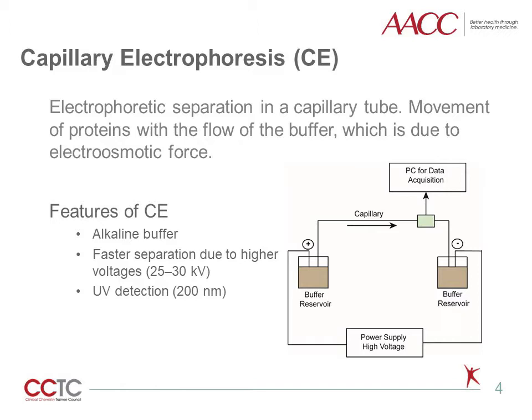Capillary electrophoresis is a separation technique where electrophoresis is performed in a capillary tube with the application of high voltage. CE consists of a high voltage power supply, a sample introduction system, a capillary tube, a detector, and an output device. Capillary tubes are usually composed of fused silica with an internal diameter of only 20 to 100 micrometers. The fused silica contains silanol groups that become ionized in an alkaline buffer, creating an electric double layer producing a flow of buffer towards the cathode. This electroosmotic flow causes most proteins to travel in the same direction regardless of their charge. Proteins move from anode to cathode and are detected usually with 200 nanometer wavelength UV light, but also through electrochemical, fluorescence, conductance, or mass spectrometry methods. CE is popular in clinical laboratories because of fast throughput and utilization of small sample volume.